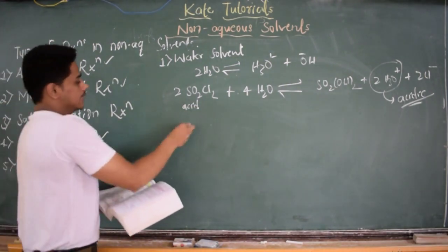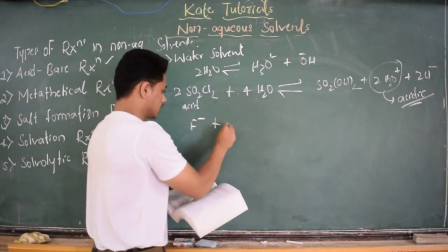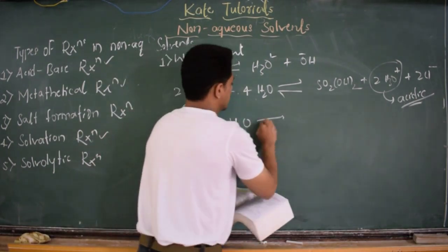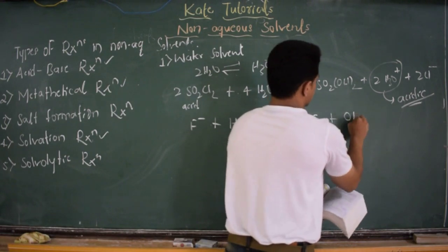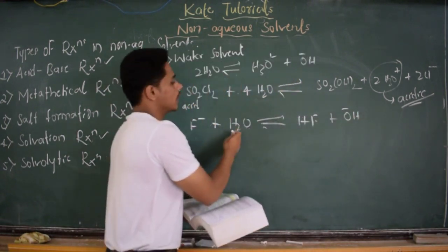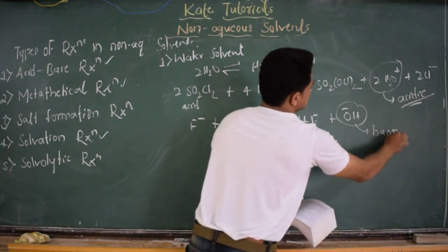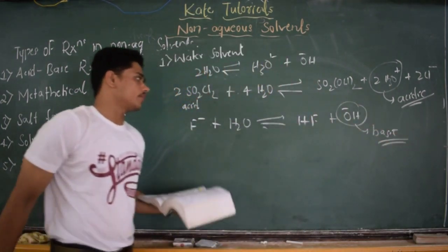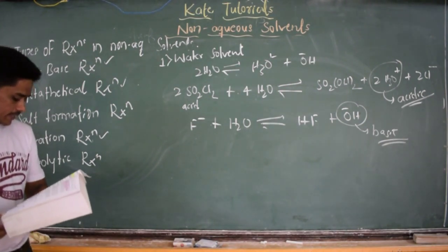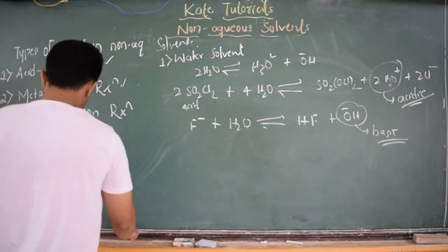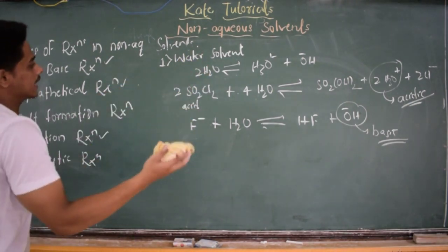Similarly, a base (F⁻) when added to water gives HF plus OH⁻. Because of the OH⁻ produced, the solution is basic. So base added to water gives a basic solution. This is the aqueous case of solvolysis — hydrolysis — where water acts as the solvent and breaks to produce either H₃O⁺ (acidic) or OH⁻ (basic) depending on whether an acid or base is added.